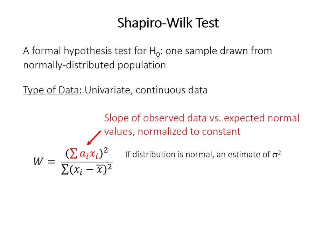The denominator is also an estimate of population variance — it's just the sum of squares. Therefore, if the null hypothesis is true and the data are actually normal, W should equal 1, because the top and the bottom of this equation are both estimating the same thing.